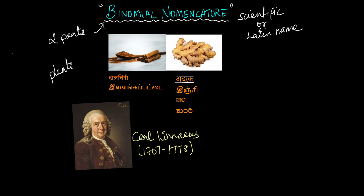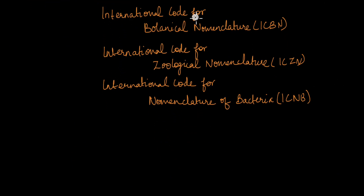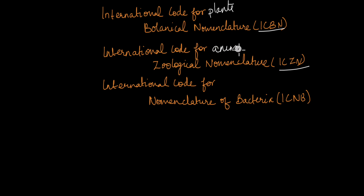When we are talking about naming organisms, you cannot just name them any way you want. There are certain codes or regulations set forth by different organizations. There is the International Code for Botanical Nomenclature or ICBN, which is involved in the nomenclature of plants. There is the International Code for Zoological Nomenclature, ICZN, for animals. And there is the International Code for Nomenclature of Bacteria, ICNB, for the nomenclature of bacteria and other microorganisms.